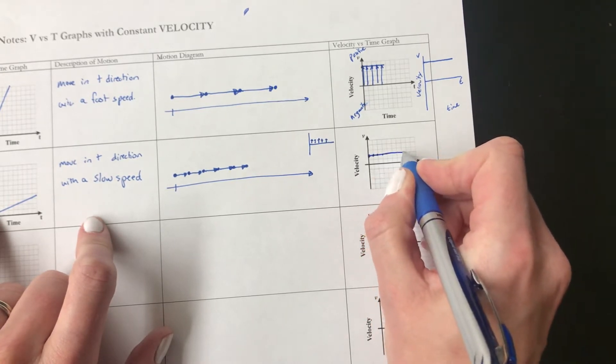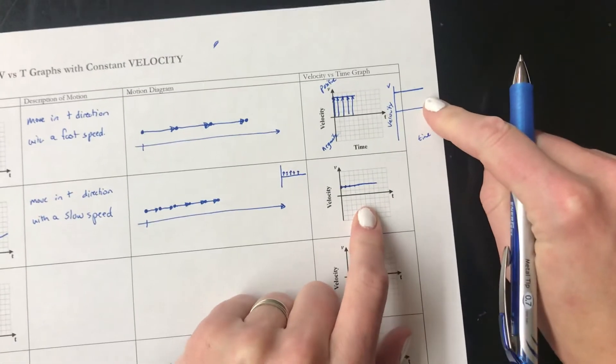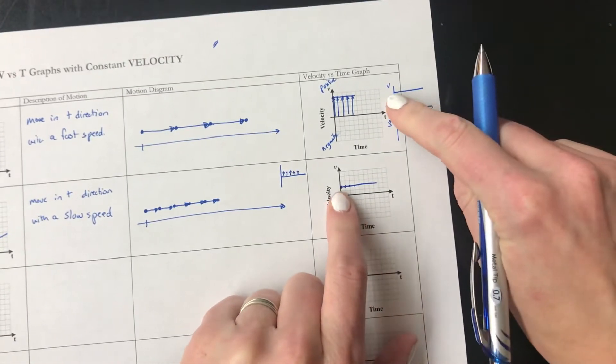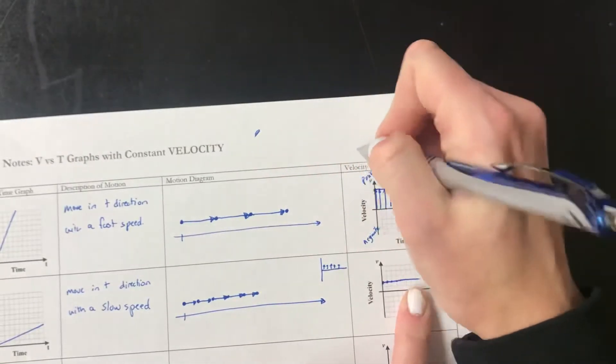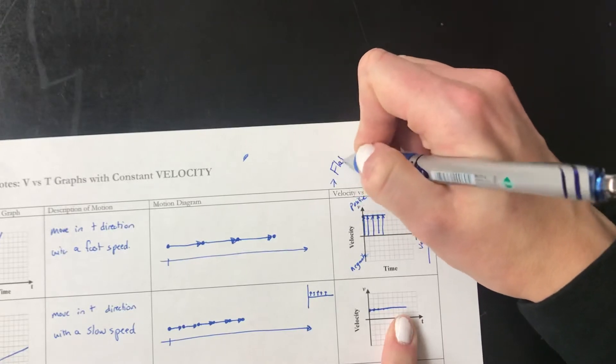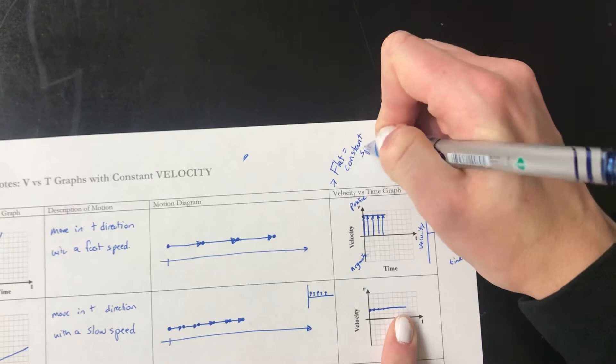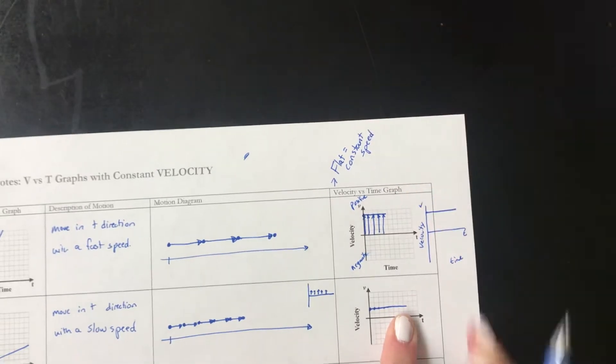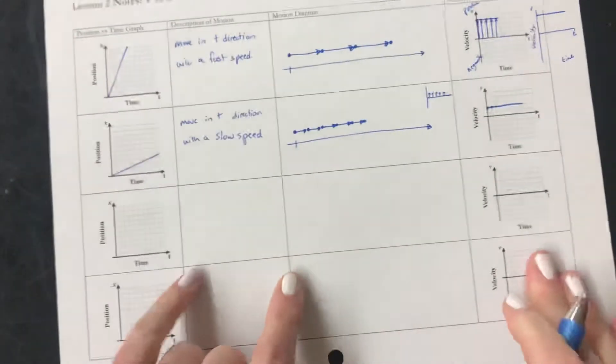But it's staying the same slope the whole time. So this time my line is going to look like this. So hopefully you can compare here. It's a flat line because it's going at a constant velocity. So for my velocity vs. time graphs. Flat equals constant speed.